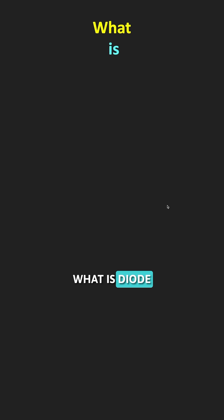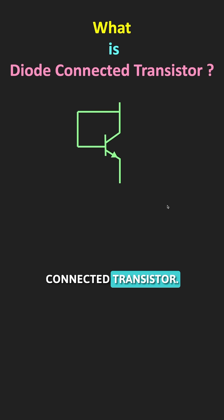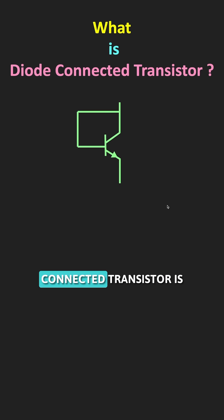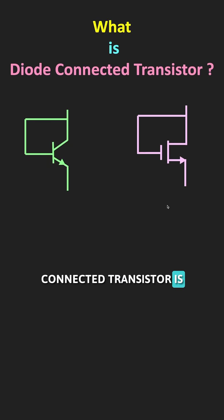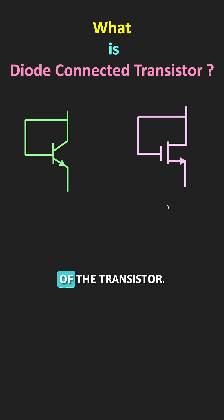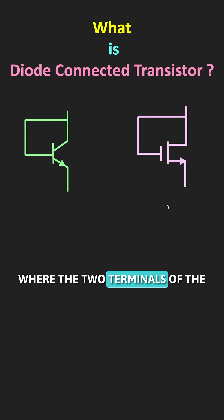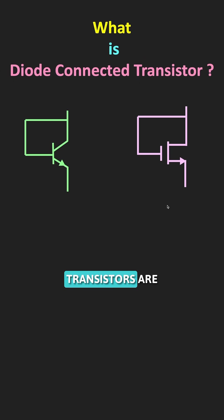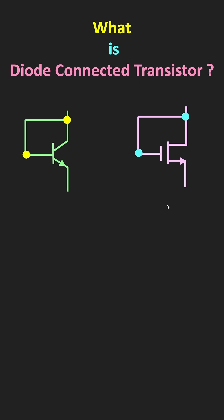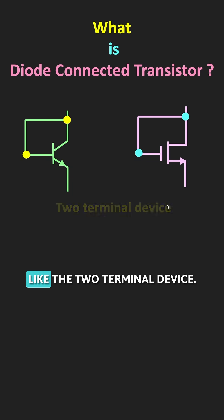In this short video, let us understand what is a diode-connected transistor. This is the configuration of the transistor where two terminals of the transistor are connected together to make it work like a two-terminal device.